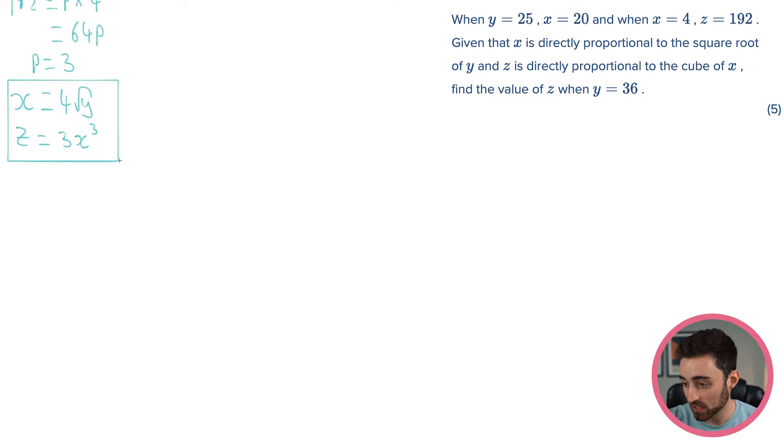So what do we want? We want the value of z when y equals 36. So there's one thing that I'm noticing. We don't have a relationship directly between z and y. The only link here is this x. Because x is related to y, and then x is related to z. These two aren't directly related to each other. But given that we have this middleman x, then we're all right. Because I've got this y value. Why don't I use that y value to find the x value, and then that x value to find the z value? That's exactly what I'm going to do.